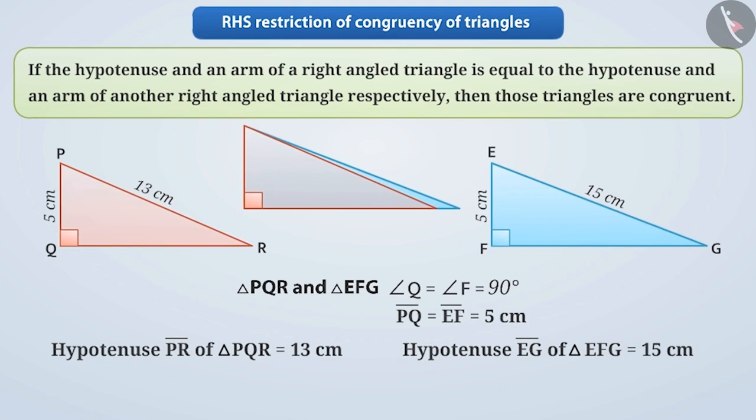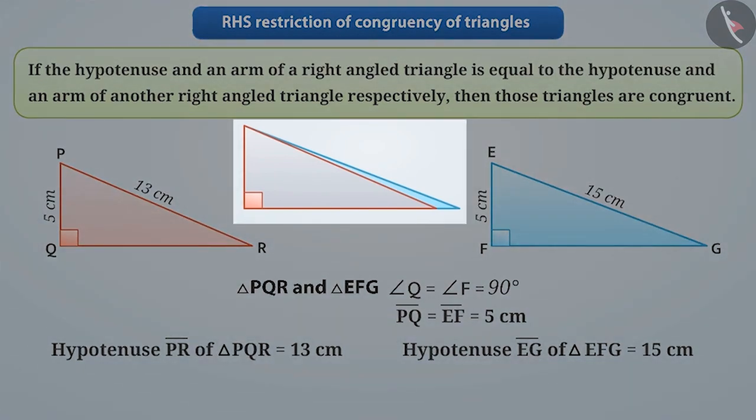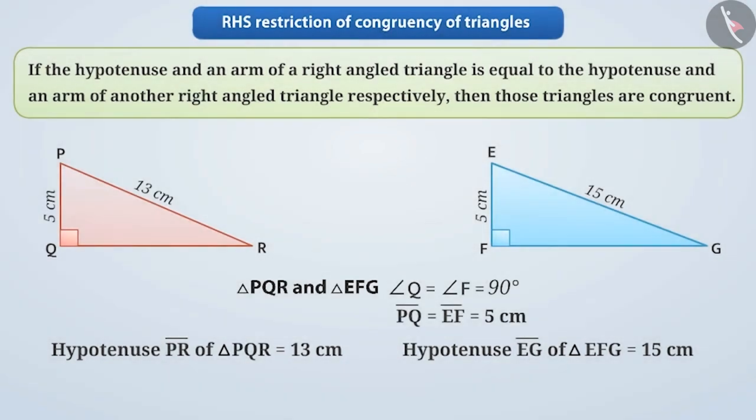then we will see that one triangle cannot completely cover the other triangle. That is, the size and shape of these two are not equal. Therefore, in this case triangle PQR and triangle EFG are not congruent.